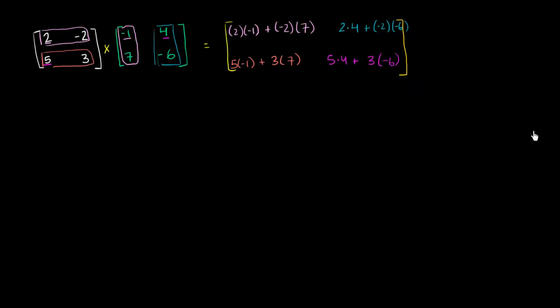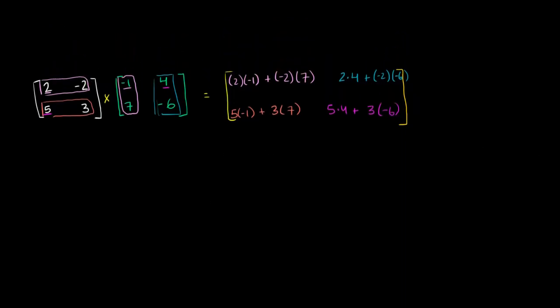Now what does all of this simplify to? So this is going to be equal to, let's see. So negative 2 plus negative 14, that's going to be negative 16. That right over there is negative 16. Then we have 8 plus 12, so that's going to be 20. And then we have negative 5 plus 21, which is going to be 16, positive 16. And then finally, you're going to have 20 minus 18. So that's just going to be 2. So the product of these two matrices, we deserve a little bit of a drum roll at this point. When we multiply this 2 by 2 matrix times this 2 by 2 matrix, we are going to get negative 16, 20, 16, and 2. And we are done.